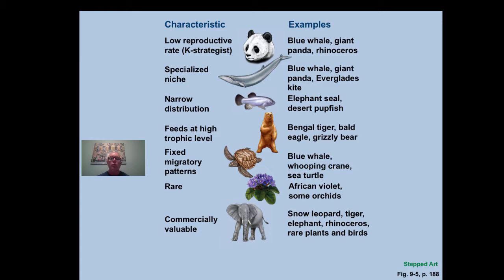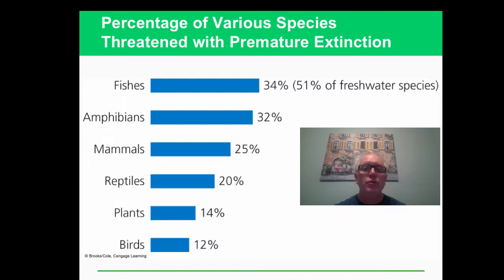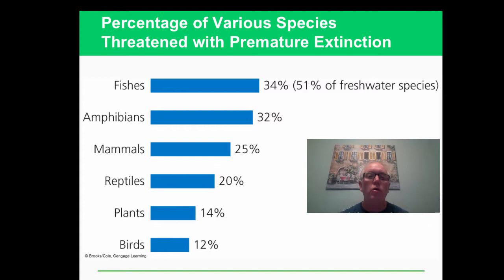Large territories - species that need a large territory to roam are suffering as we degrade their territories. This gives you an idea of how species are threatened with premature extinction. Extinction that would not be background extinction - extinction that we are causing.